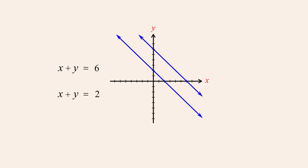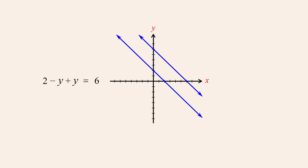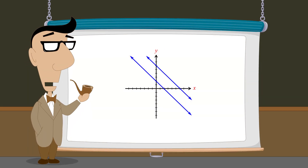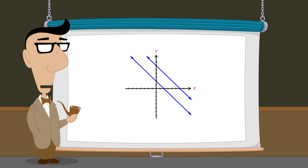Attempting to solve this system by the substitution method will also produce a contradiction. Solving the bottom equation for x, we get x equals 2 minus y, which can then be substituted for x in the top equation, producing an equation with only the variable y. The two y terms then cancel, leaving us with the contradiction two equals six. Obtaining a contradiction indicates that this system has no solutions and is therefore inconsistent. Since the system has no solutions, its solution set is the empty set.